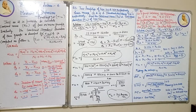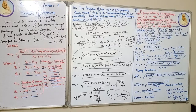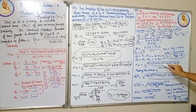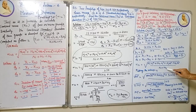Now we compute D1 and D2. D1 = mean of first series − combined mean = 10 − 8 = 2. D2 = mean of second series − combined mean = 6 − 8 = −2. Now we set up the combined standard deviation formula to find σ2: √10.5 = √[ (50×4 + 50×σ2² + 50×4 + 50×4) / 100 ].